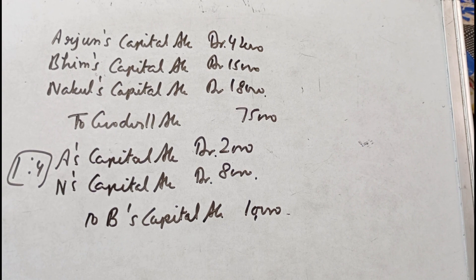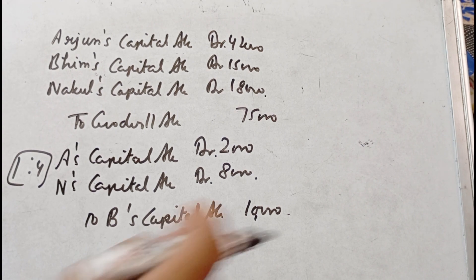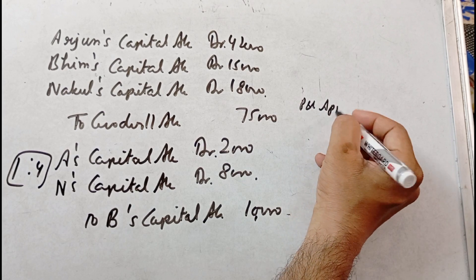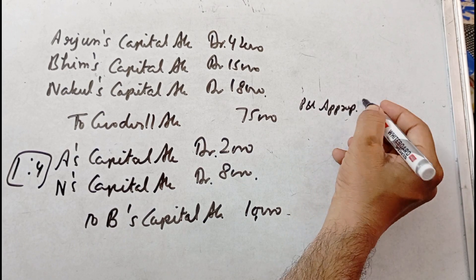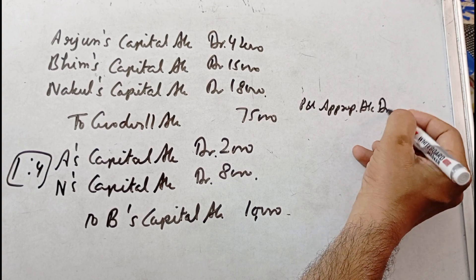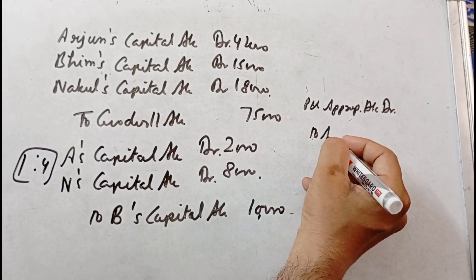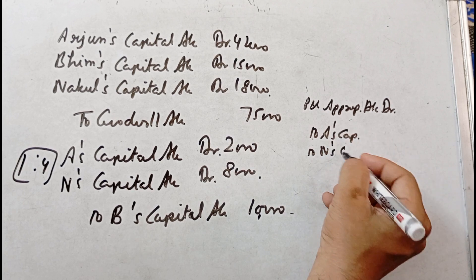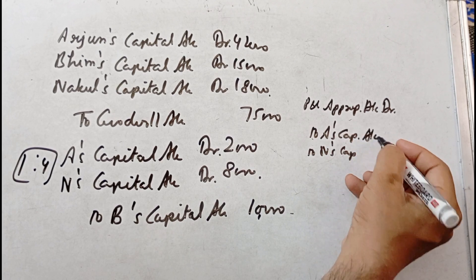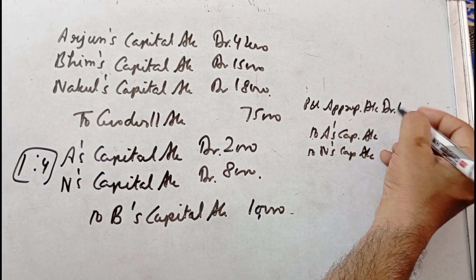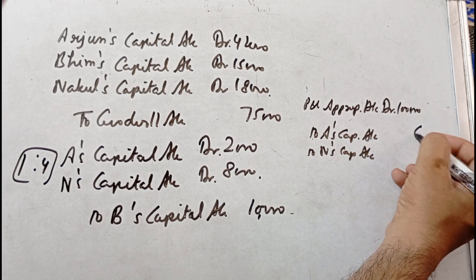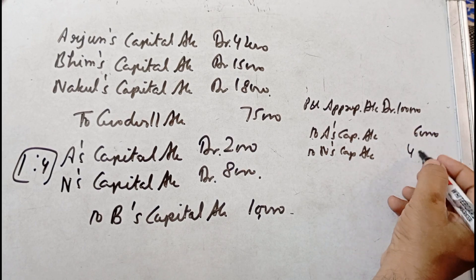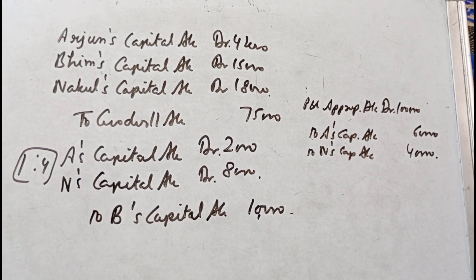Now the third entry: distribution of profit of the first year of new partnership. The entry is P&L Appropriation Account debit, to Arjun's Capital Account and to Nakul's Capital Account. This profit is added to both of them in the new ratio of 3 is to 2. The profit is Rs. 1,00,000. In 3 is to 2 ratio, Arjun gets Rs. 60,000 and Nakul gets Rs. 40,000.